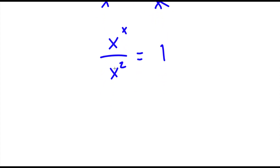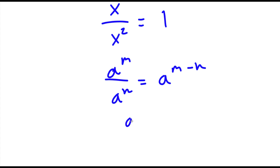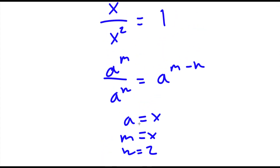Now, if I have something in the form a to the power of m over a to the power of n, this is equal to a to the power of m minus n. So in this case, a is equal to x, m is equal to x, and n is equal to 2. So I'm going to put this in the form a to the power of m minus n, which gives me x to the power of x minus 2, and this is equal to 1.